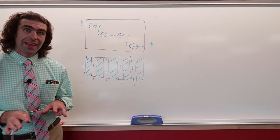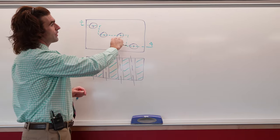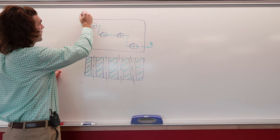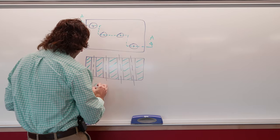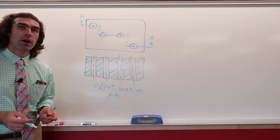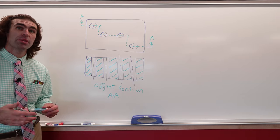There's nothing in the actual section view that's going to indicate that this was an offset section. The only way it could be indicated—say you label these AA—you might see it in the section label. Otherwise, there's no extra lines or anything telling you they're not on the same plane.